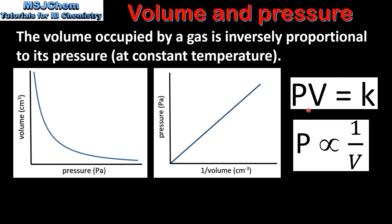This can be written as pressure times volume equals a constant K. In this graph of volume against pressure, we can see that as the volume decreases the pressure increases, or as the pressure decreases the volume increases. Another way of stating Boyle's law is that pressure is directly proportional to 1 over volume, so in this graph of pressure against 1 over volume we get a straight line.